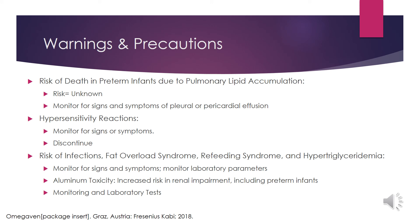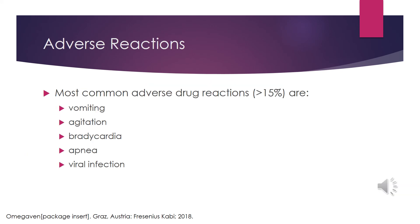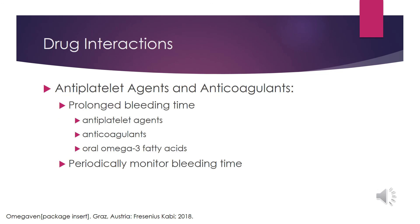Monitor for signs and symptoms and monitor laboratory parameters. There is a risk of aluminum toxicity with increased risk in patients with renal impairment, including preterm infants. Routine laboratory monitoring is recommended, including monitoring for essential fatty acid deficiency. The most common adverse drug reactions are vomiting, agitation, bradycardia, apnea, and viral infections. There are drug interactions with antiplatelet agents and anticoagulants, as prolonged bleeding time has been reported. Periodically monitor bleeding time in patients receiving Omegaven and concomitant antiplatelet agents or anticoagulants.